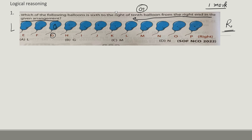Now go back to the question: 6th to the right of G. You have to go to the right of G. Counting 6 to the right: 1, 2, 3, 4, 5, and 6. So the answer is M. The correct answer is C, M.